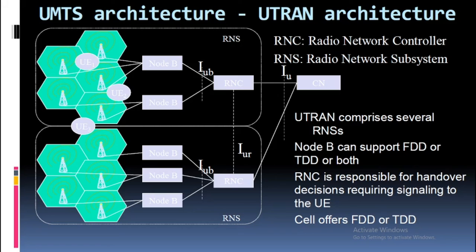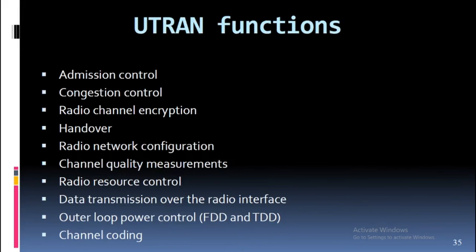UTRAN functions include: admission control, congestion control, radio channel encryption, handover, radio network configuration, channel quality measurements, radio resource control, data transmission over the radio interface, outer loop power control for FDD and TDD, and channel coding.